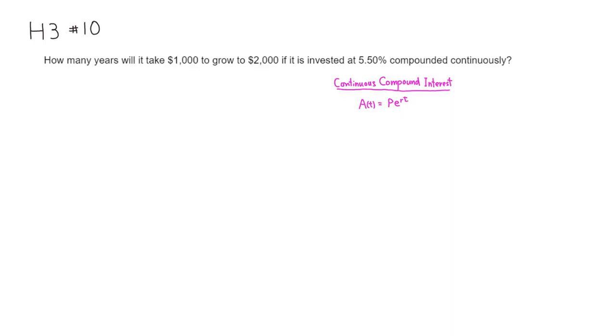So let's do that. We have a continuous compound interest formula, which is A of t equals P e to the rt.